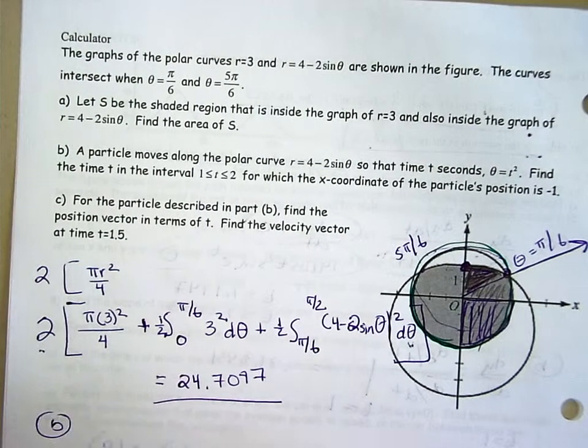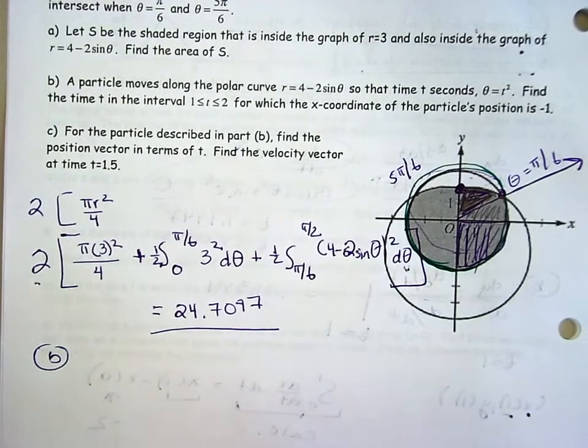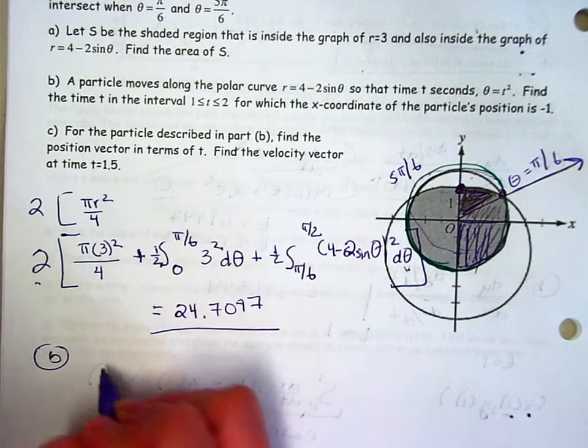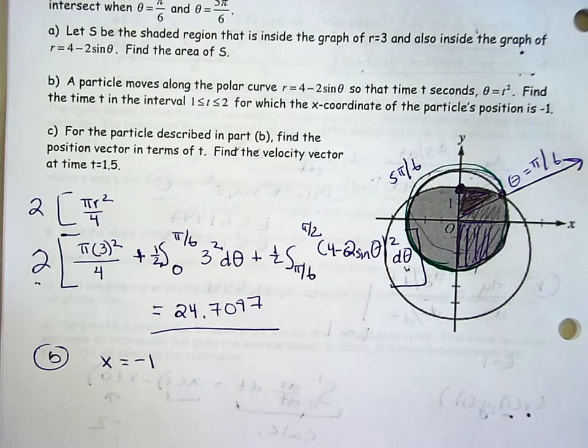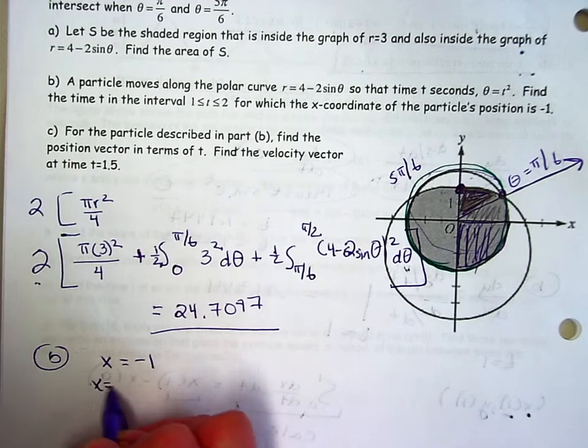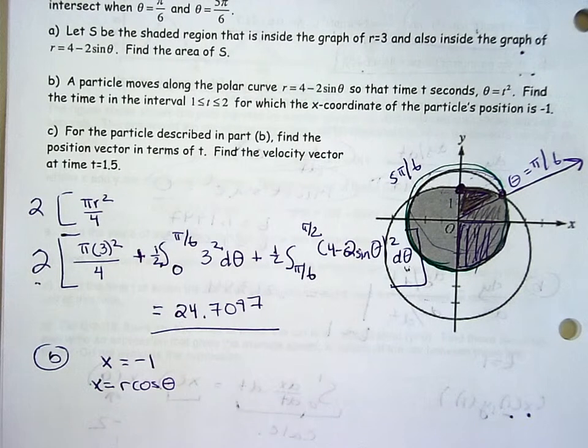Part B tells you a particle moves along the curve, so that time t, θ is the same as t². Find the time at which the x-coordinate is -1. They're talking about θ and x's. The only equation you can work with is the conversion, x = r cos(θ). They want you to find the value of t.